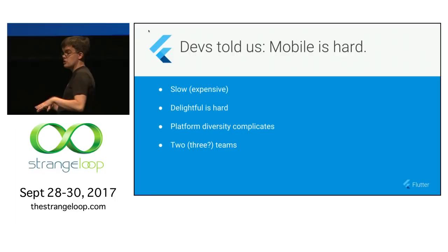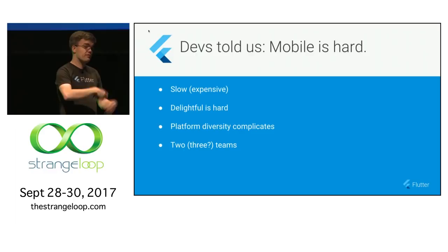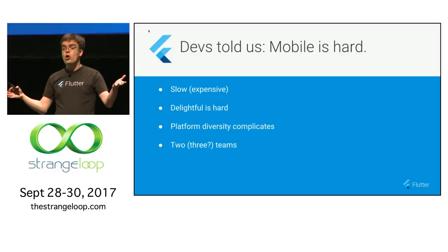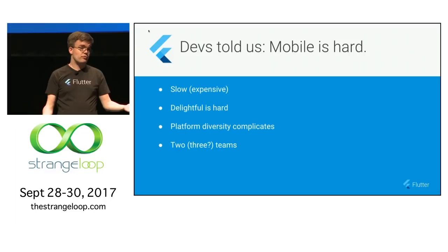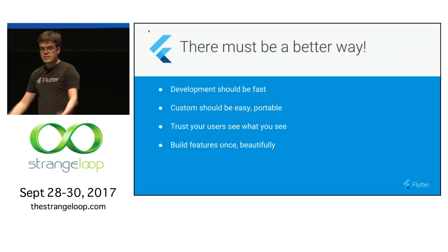We heard that getting to mobile can be slow and expensive. We heard that doing delightful things on mobile — which designers want, developers want, and users want — can be hard. We heard that platform diversity complicates this, and that if you really want to reach all users in the U.S. market, you have to develop for multiple platforms, which can mean two or three teams. So we said to ourselves, there must be a better way.